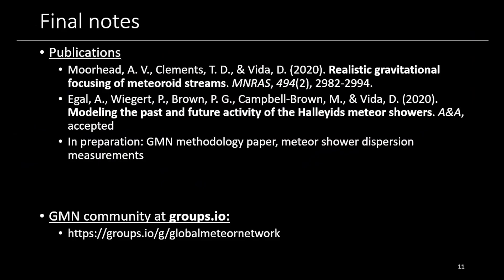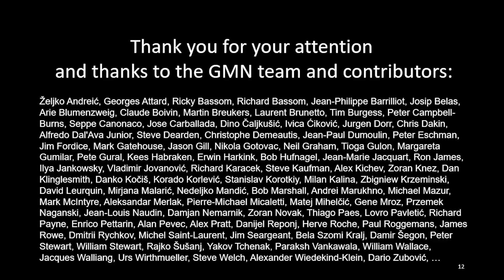Because the GMN data is public and the uncertainties of every trajectory are well defined, it has already been used in several publications. Due to the high precision, for the first time it was possible to measure dispersions of meteor showers with high accuracy. These measurements will help constrain models of gravitational focusing of meteor showers, useful for predicting meteoroid impact risk on spacecraft. The GMN measurements of Orionid radiance also compare well to model values. In preparation, we have a GMN methodology paper and a meteor shower dispersion paper. Finally, we're proud of our GMN community — we have a mailing list where all meteor camera hosts coordinate. Thank you, and I'd like to thank all GMN team members and contributors.